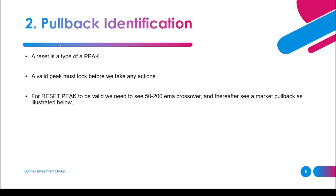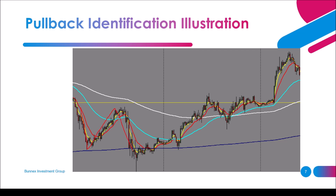After peak reset location, we move to pullback identification. A reset is one type of peak, and a valid peak must always lock before we take any action. Peak locking requires us to see a 5/200 EMA crossover. So for a peak reset to be valid, we need to see the 5/200 EMA crossover and thereafter see a market pullback. In the example shown, after the W pattern, we see the 50 and 200 EMA — the blue and white lines — crossing, confirming the peak has locked.